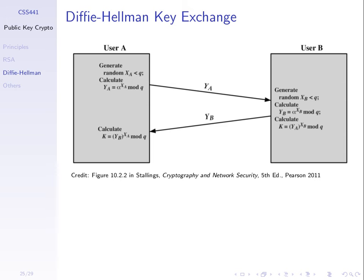In this example, it's assumed that A and B know the two global variables: alpha and Q. These values are chosen and anyone can know them. A generates a random private value called X — that's the private value of A. There are some conditions; X must be less than Q. Then A calculates their public value Y. So A has a private X and a public Y — think of them as private key and public key.